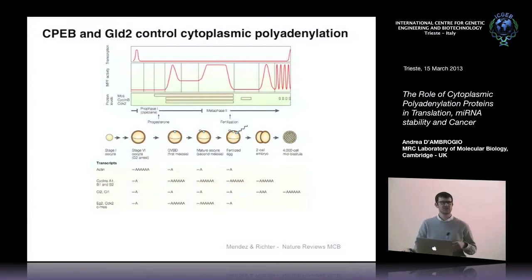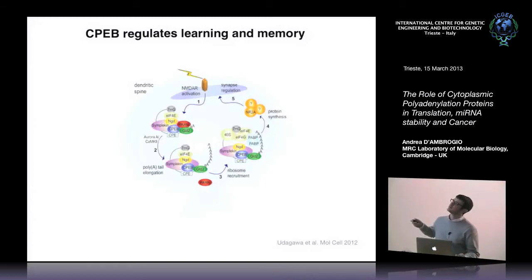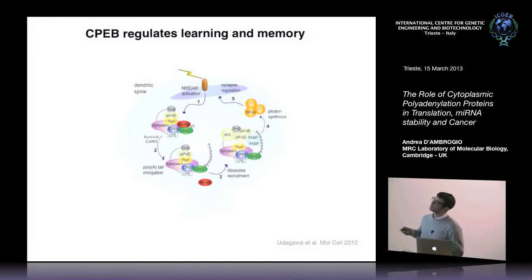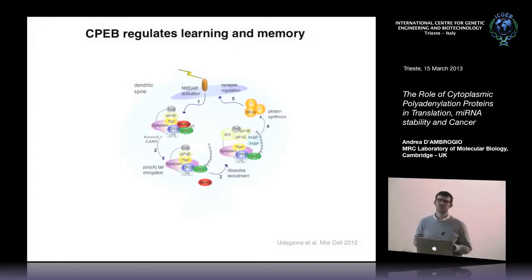Are there other systems in which polyadenylation-mediated translation is important? Yes — one is the brain. This is a dendritic spine in a synapse. Upon stimulation, an NMDA receptor gets activated and remodels the complex I've been showing you, so that particular mRNAs get their poly-A tail elongated, activated, and translated. This in turn modifies the synapse so that its properties are changed, and this is at the basis of memory and learning.